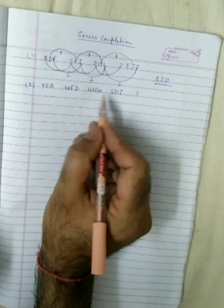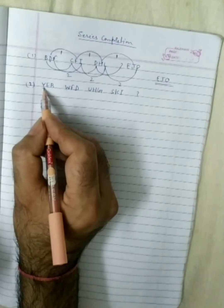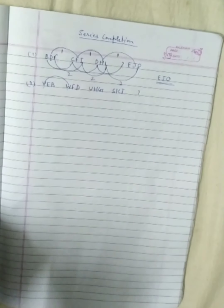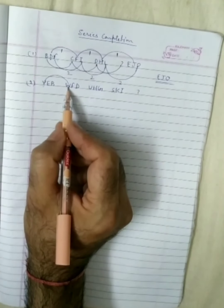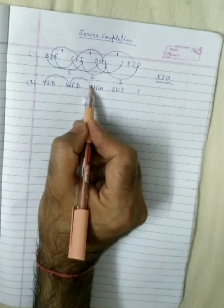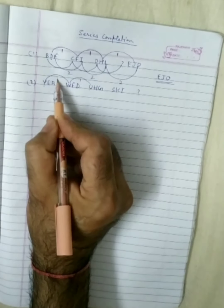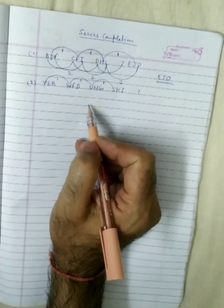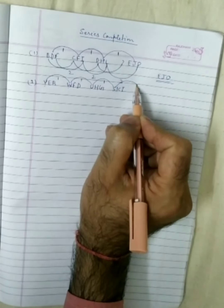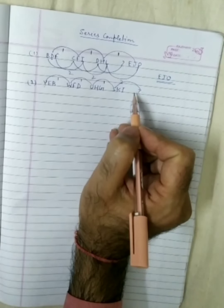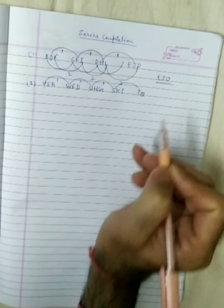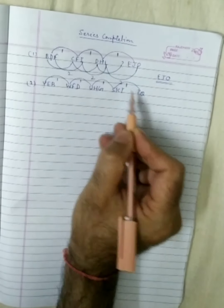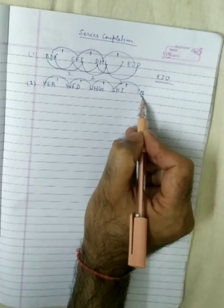Checking the pattern: Y, X, W — one letter gap. W, V, U — one letter gap. U, T, S — one letter gap. So the next first letter, continuing the same pattern with one letter gap, must be Q. S, R, Q — so the first letter of the missing term is Q.